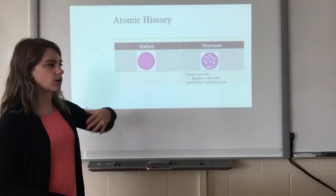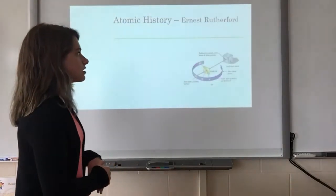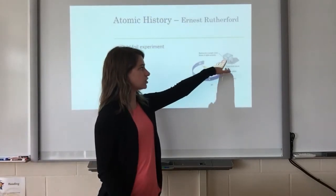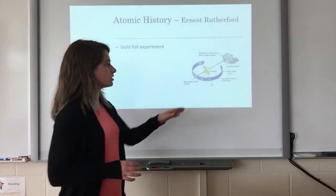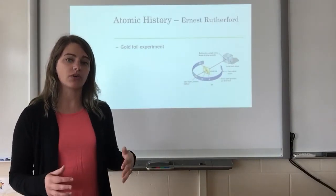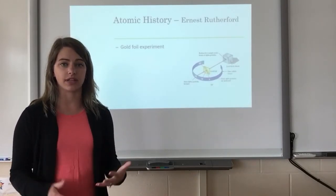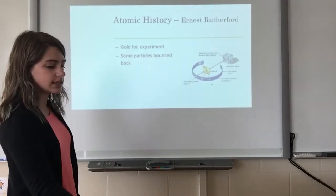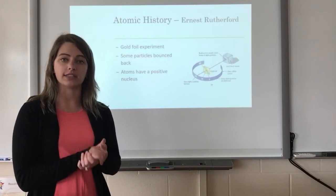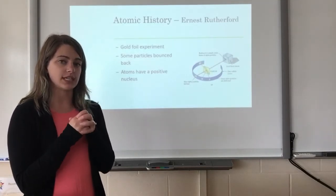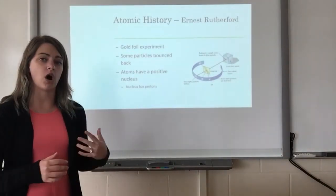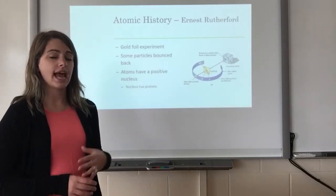Thomson's model is credited with the discovery of electrons. After JJ Thomson comes Ernest Rutherford, who performed what we call the gold foil experiment. Rutherford shot alpha particles at gold foil. What he saw was that most of the time the alpha particles went through, but sometimes they were deflected. If Thomson's model were still correct, the alpha particles should have always gone through because nothing should have been in the way to deflect them. When some particles bounced back, Rutherford concluded something had to be in the way — he called it the nucleus. He said the positive part of the atom was all bunched together in the center, forming the nucleus, and that nucleus contains what we now call protons. Rutherford is credited with the discovery of the nucleus and protons.